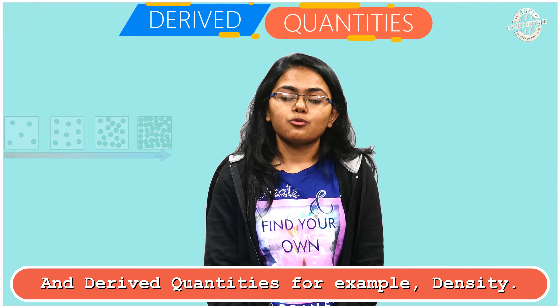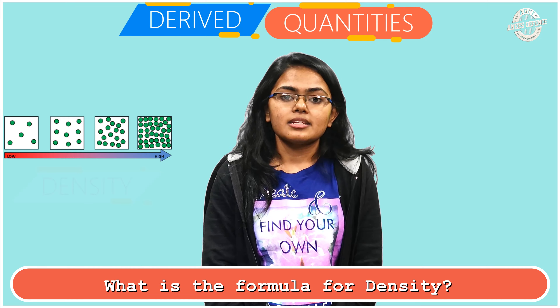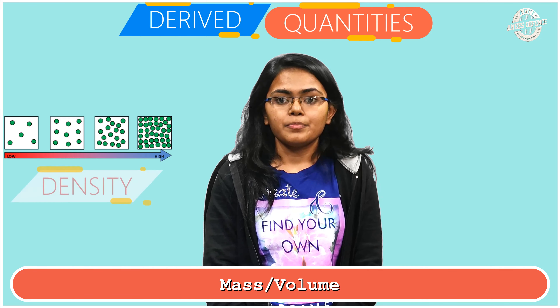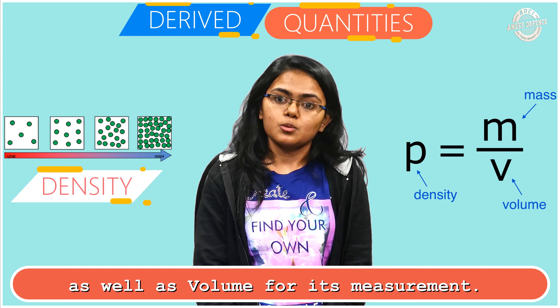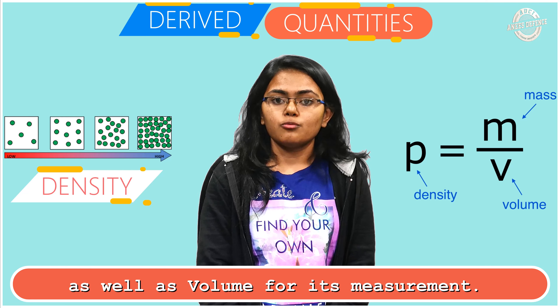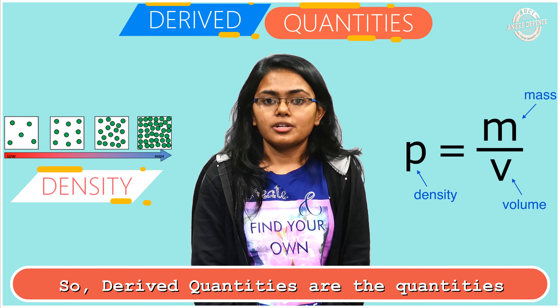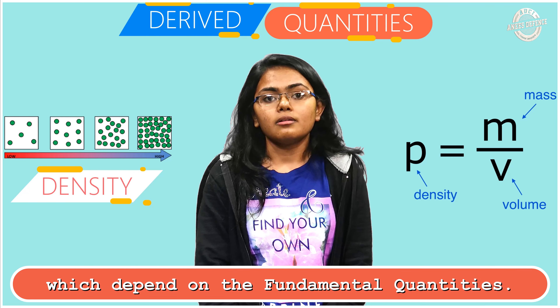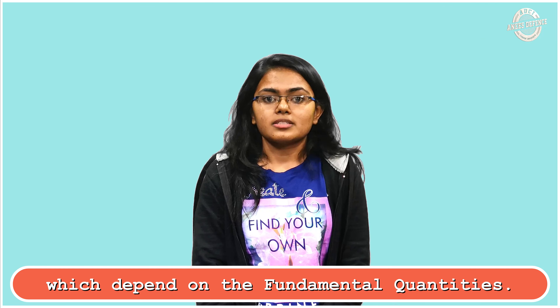An example of a derived quantity is density. The formula of density is mass upon volume. So density depends upon mass as well as volume for its measurement, which makes it a derived quantity that depends on fundamental quantities.